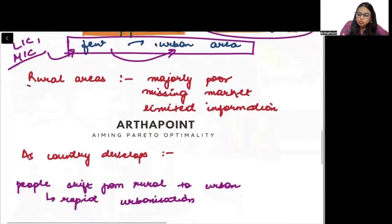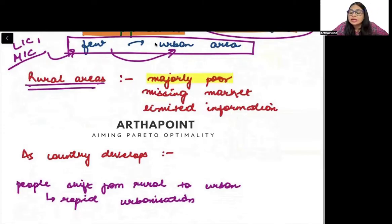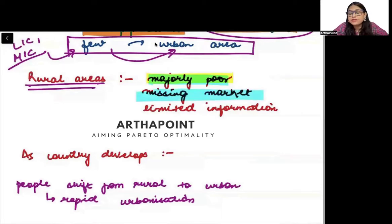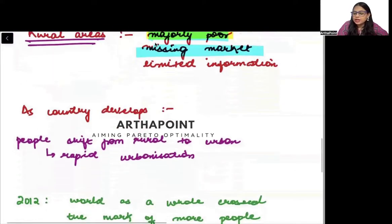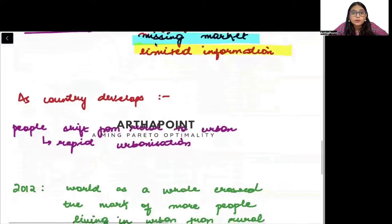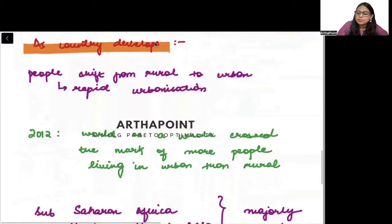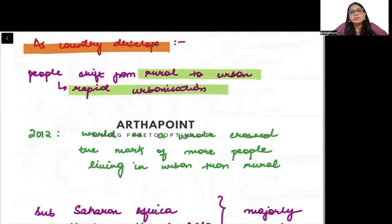The rural area is also categorized by these features: majorly people are poor because in agriculture there is disguised unemployment — whatever work can be done by two people, five people are doing that work. So people are poor and income is low. There is also the concept of missing markets — infrastructure is missing, such as proper electricity and roads — and people have limited information. But as a country develops, people shift from rural to the urban sector.